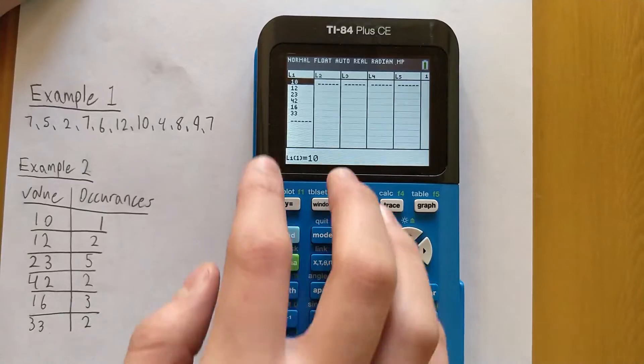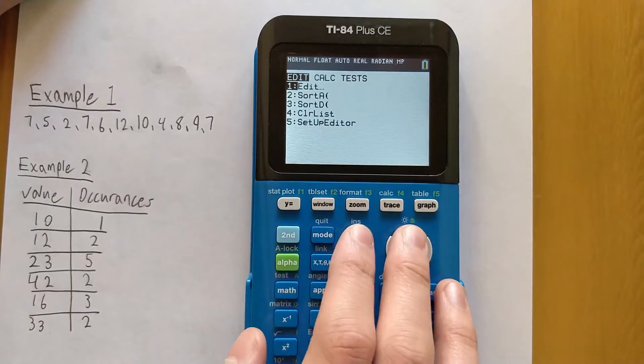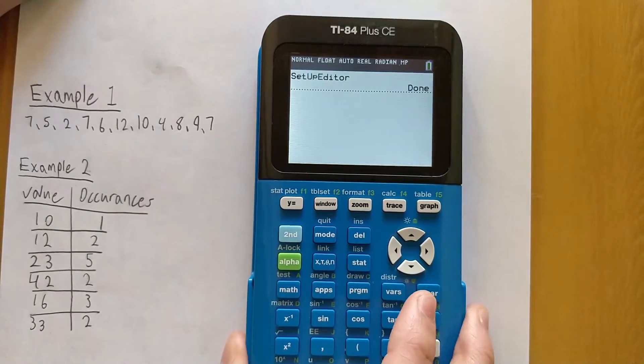There are two things that can go wrong here. If you don't have L1 or L2, what you can do is go to Second, Mode, STAT, and then the fifth option here, Set Up Editor, and that will give you L1 and L2 if they're not there.